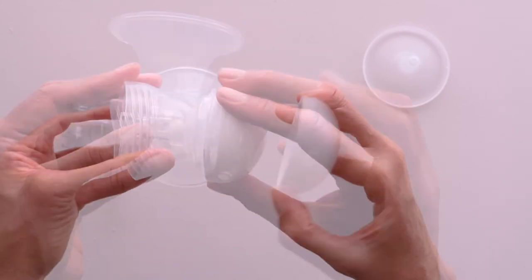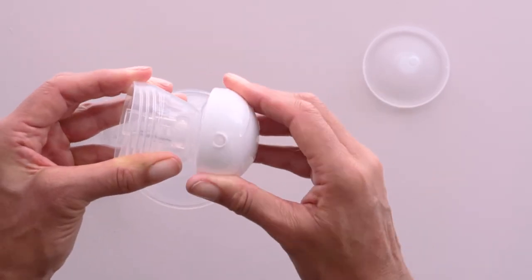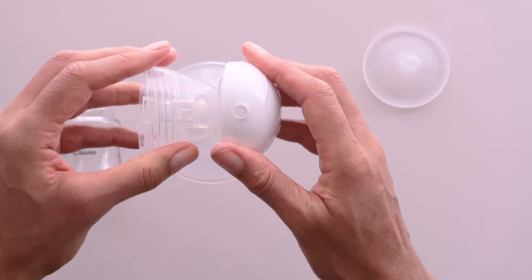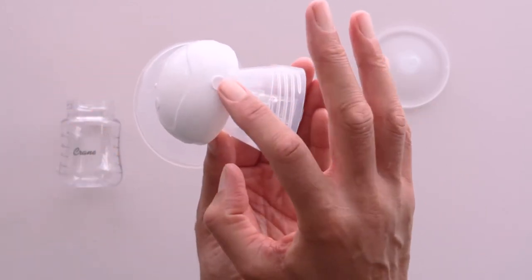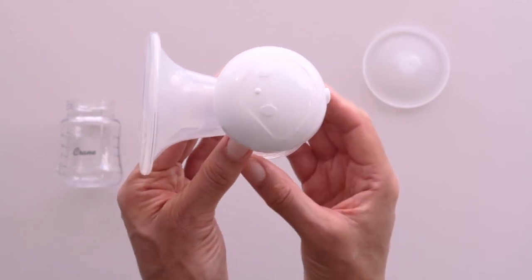Screw the cap on tightly to prevent any air from leaking. Ensure the tubing outlet is at the back of the body.